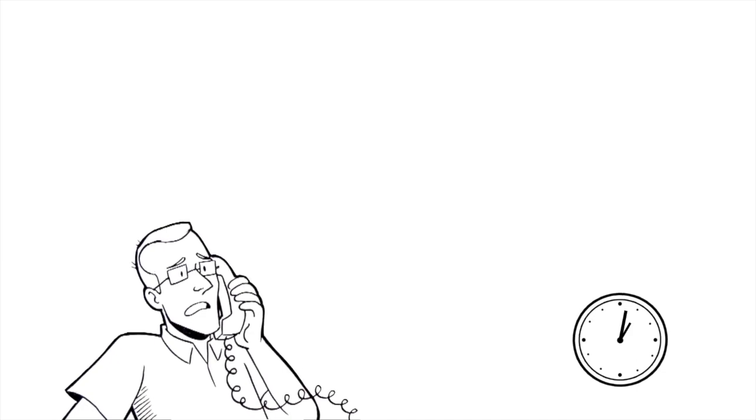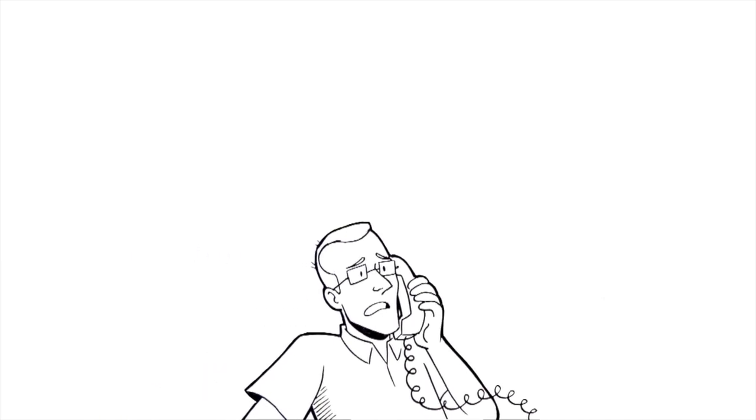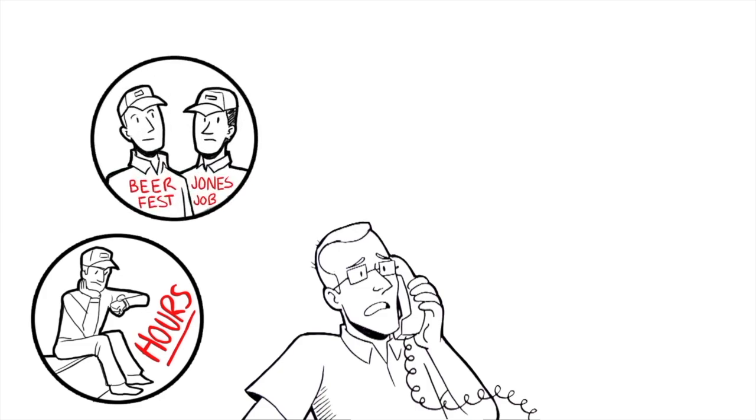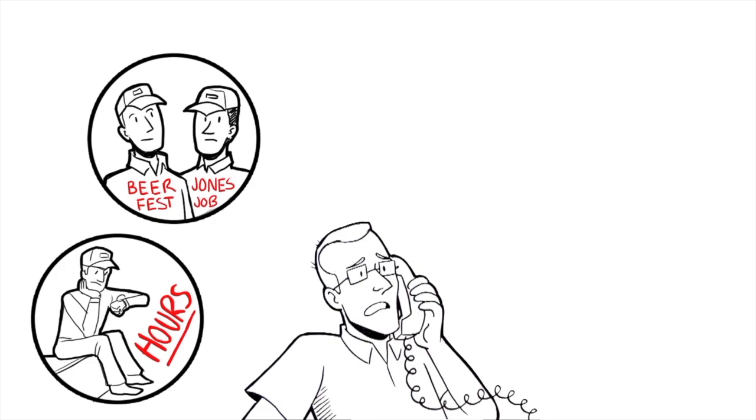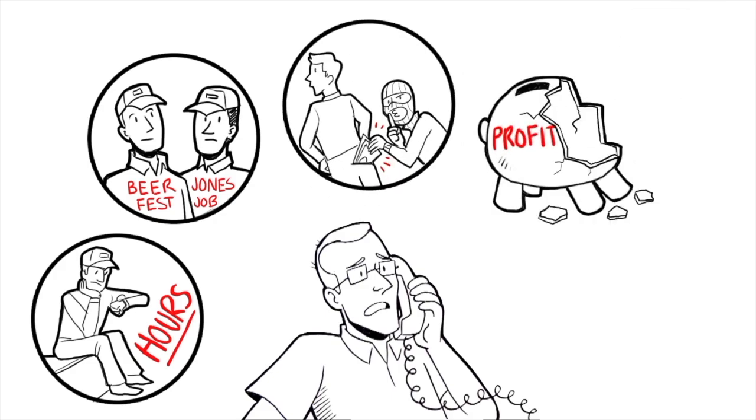He considers his options. He could get his crew to clean a new section and send it back to the event, but that would take hours. And what about all the other jobs going on today? Where's he going to find the manpower to deal with this? He's going to have to rob Peter to pay Paul. Again. There goes the profit on the job.